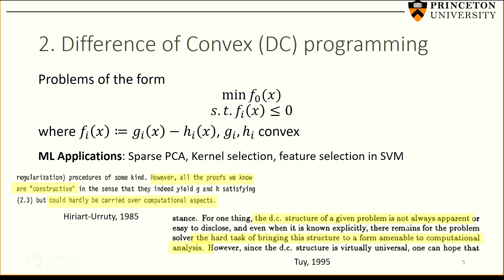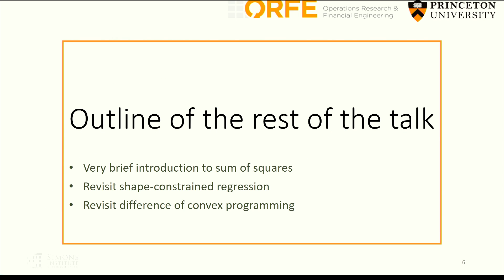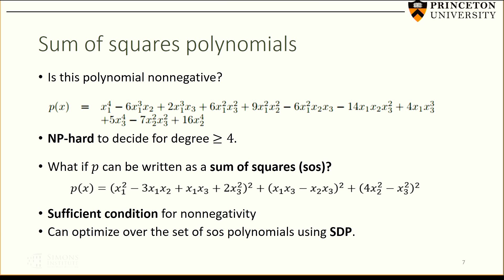Those are the two applications I'll revisit throughout this talk. The outline: I'll give a very brief introduction to sum of squares on just one slide to get everyone on the same page, then revisit these two applications. Testing whether a polynomial is non-negative is hard when the degree is greater or equal to four. A popular tractable surrogate is sum of squares polynomials — a sufficient condition for non-negativity. What we like about SOS polynomials is that optimizing over them is a semi-definite program.